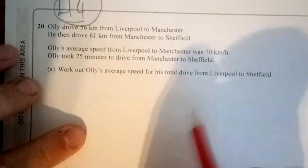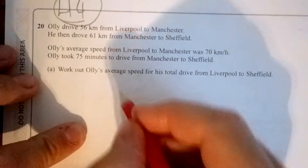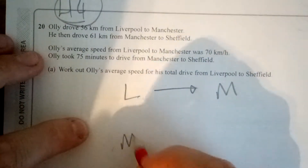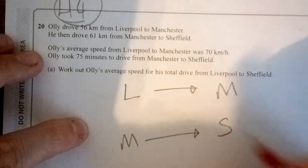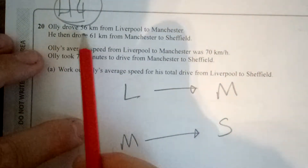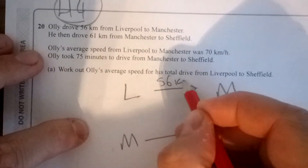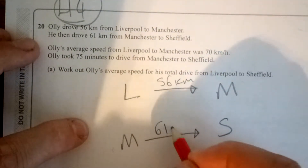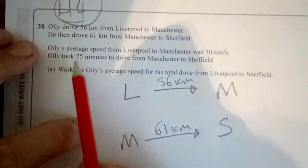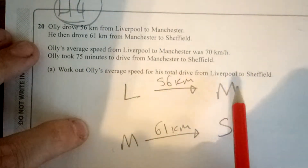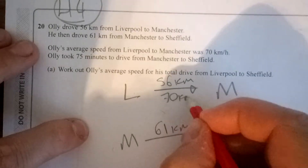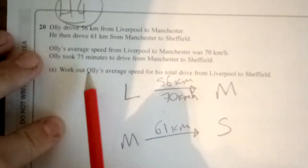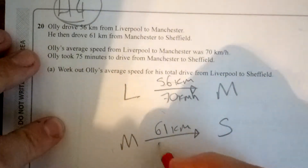This is the most confusing part because there's a lot of words, so I'm going to write it out. Liverpool to Manchester, and Manchester to Sheffield. I know the Liverpool to Manchester leg is 56km, and Manchester to Sheffield is 61km. His average speed from Liverpool to Manchester was 70km per hour, which means I can work out the time. Then it takes 75 minutes to go from Manchester to Sheffield.